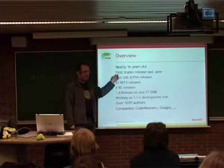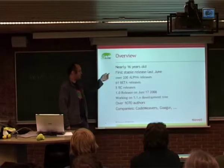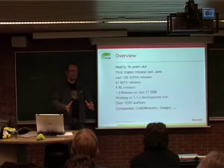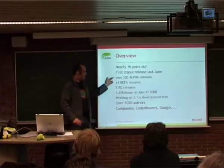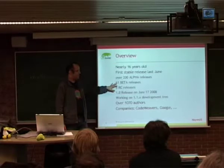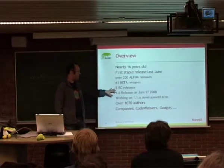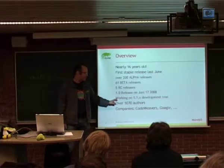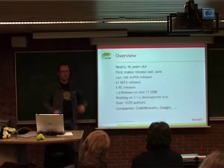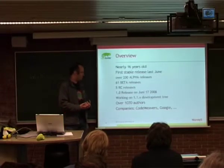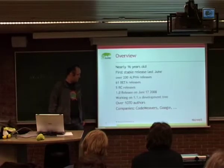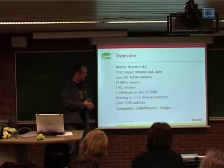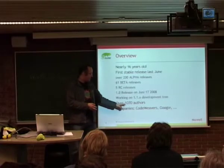We had our first stable release last June. No one expected we'd finally do it, but we took a certain set of criteria and said: now it's ready for users to test and run. In the meantime, before that, we had over 200 alpha releases and 61 beta releases - two years of beta phase, 5 release candidates - and on June 17th it was finally released. We haven't stopped working on it; development is going as fast as before, even faster. We're working on the 1.1 branch, which will eventually go to a 1.2 stable release.